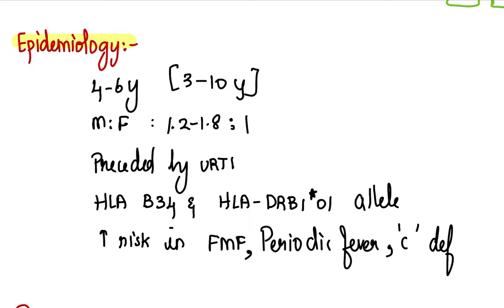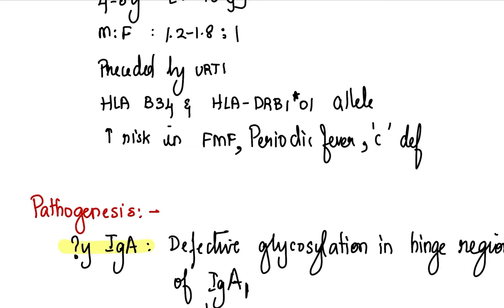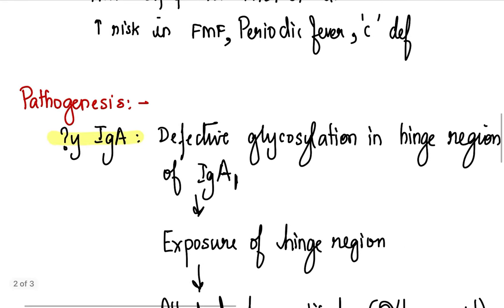HLA associations have been found with HLA-B34 and HLA-DRB1 alleles. There is increased risk of Henoch-Schonlein purpura in patients who already have familial Mediterranean fever, periodic fever syndromes, and complement deficiencies. What is the pathogenesis? Why do these patients have the classical tetrad of presentation? And why IgA?